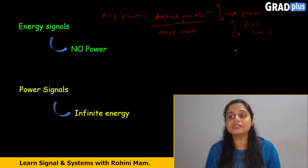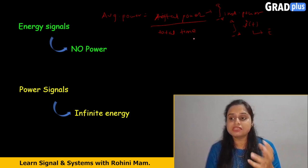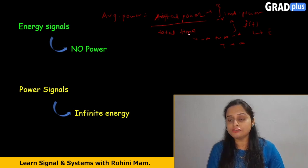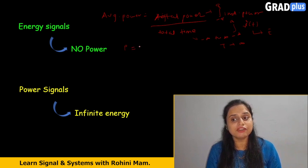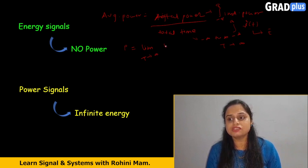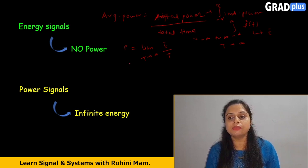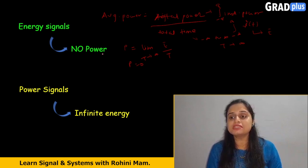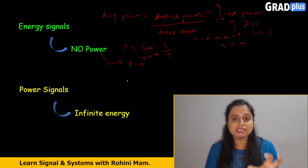This total power is nothing but your energy signal, and here the total time varies from −∞ to ∞, so total time tends to infinity. As the denominator tends to infinity, when we take the limit as T tends to infinity, this power becomes zero. So whenever any signal is an energy signal, it is having no power — power is zero. This is the proof of how power will be zero for an energy signal.